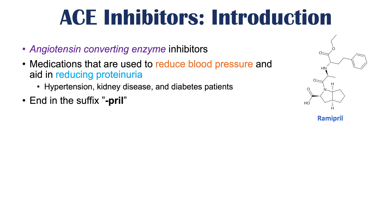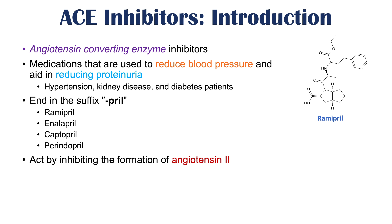These medications all end in the suffix -pril. Examples include Ramipril, Enalapril, Captopril, and Perindopril. They act by inhibiting the formation of angiotensin-2. As their name suggests, they are angiotensin-converting enzyme inhibitors — they inhibit an enzyme known as ACE, or angiotensin-converting enzyme.